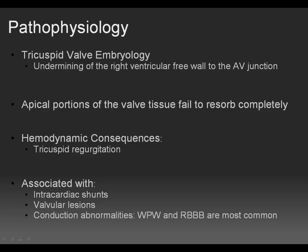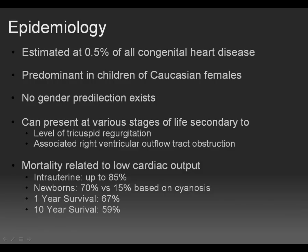Patients with Epstein's are also often seen to have intracardiac shunts, primarily patent foramen ovales and atrial septal defects of the secundum type. Patients also have valvular lesions and may present with conduction abnormalities, the most common being Wolf-Parkinson-White syndrome and right bundle branch block.